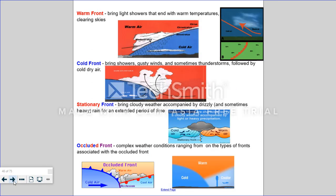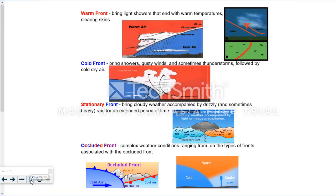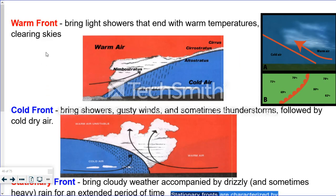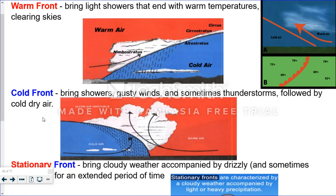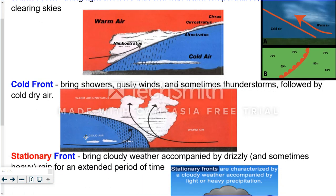Now let's talk about what type of weather fronts bring. A warm front brings light showers that end with warm temperatures and clearing skies. A cold front brings showers and gusty winds and sometimes thunderstorms, and it's usually followed by cold, dry air.